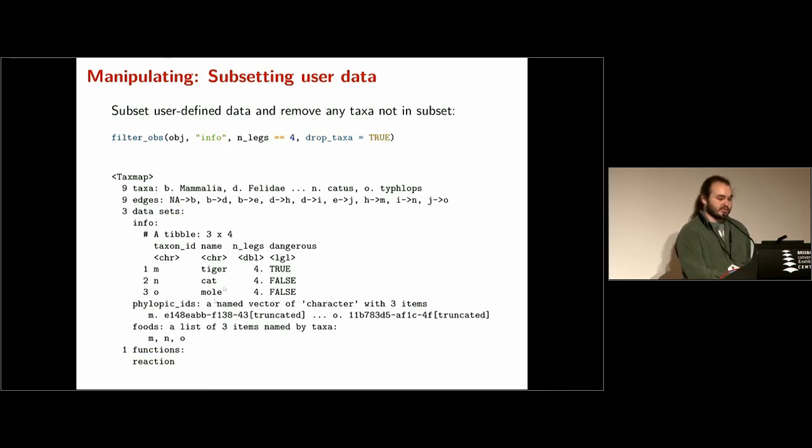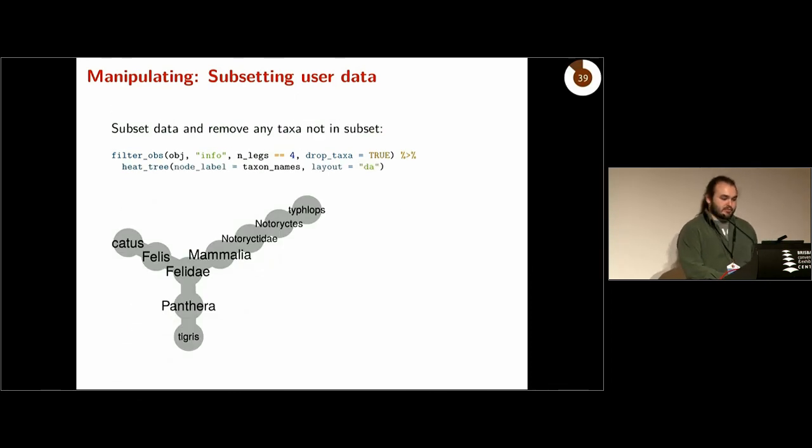You can also filter your user-defined data directly and filter the taxonomy as a side effect. Here we're filtering this info table for things that have four legs. You can see we lost three of those rows, and we have tigers, cats, and moles, all of which have four legs. And then the drop_taxa equals true option will then remove anything that's no longer in there. So both the filter_obs and the filter_taxa functions filter either your data or the taxonomy, but then keep the data and taxonomy correctly mapped together and intact. We can see when we plot it that we only have taxa that have four legs - here's tigers, cats, and moles. And people are not here, and plants are not here anymore either.